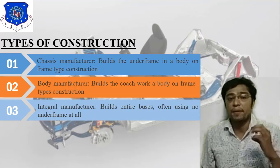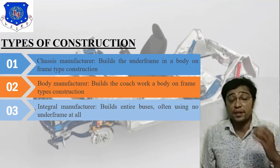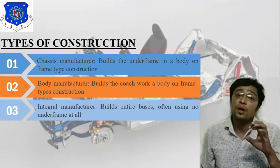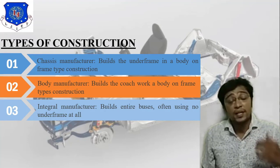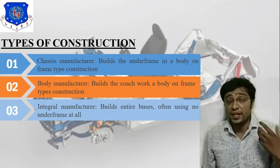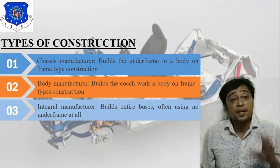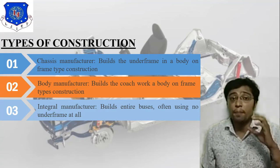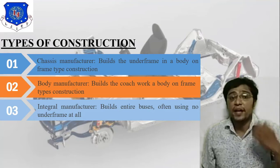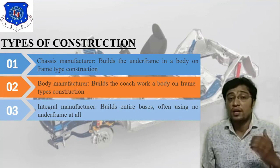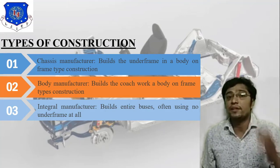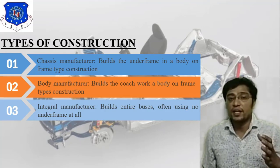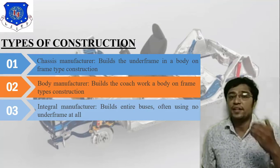The third type is integral manufacturer, which is also very important. In integral manufacture, the bus body includes passenger capacity, dashboard, and steering system. It builds entire buses, often using no under-frame at all. So in integral construction we need to consider seating arrangement, steering system, and dashboard.